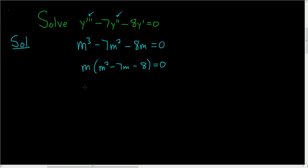Hopefully this factors. Let's try. This is m. And let's see, we need two numbers that multiply to negative 8 but add to negative 7. So it looks like negative 8 and positive 1 will do the job.